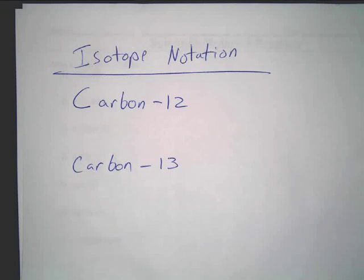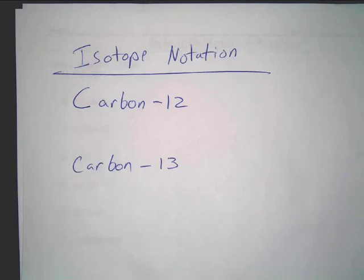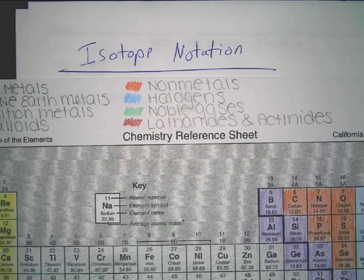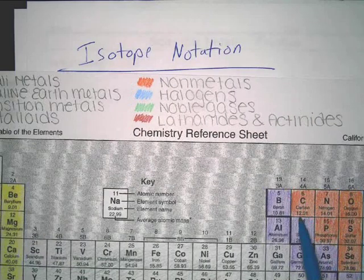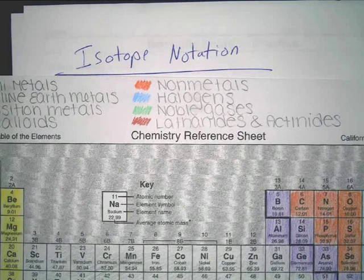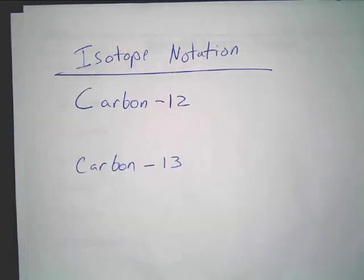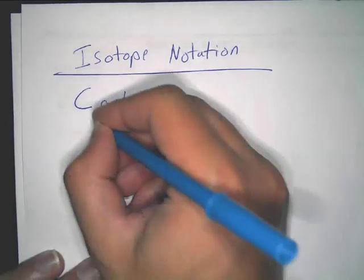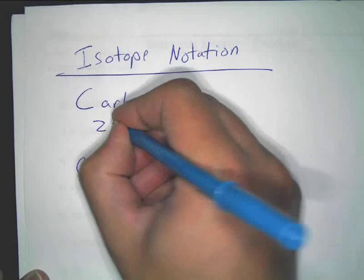You should be able to find on your periodic table that the atomic number of carbon is six. You can see it's got a six. Now, do you also see that it's got a 12.01 on the bottom? That is its atomic mass, but that's not what we're concerned with right now. So we know that the atomic number of carbon 12, represented by Z, is equal to six.